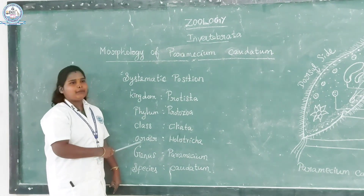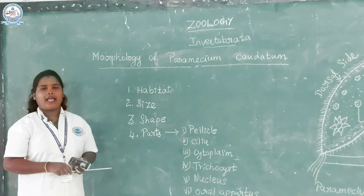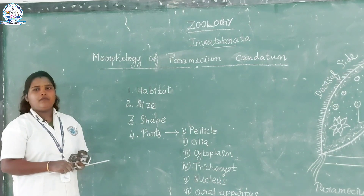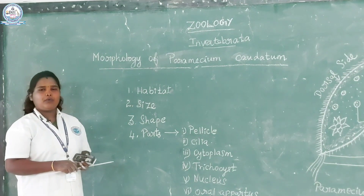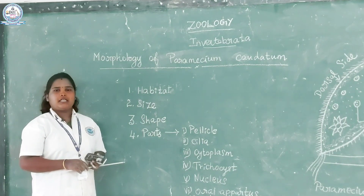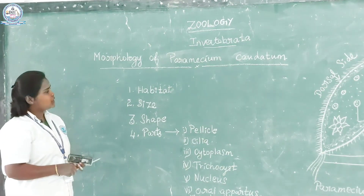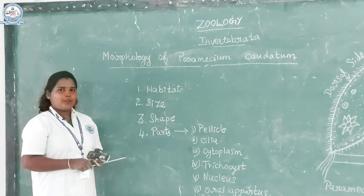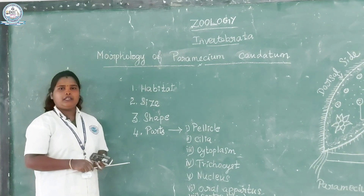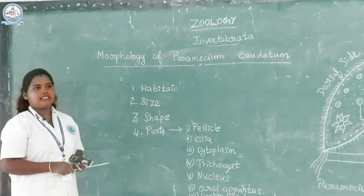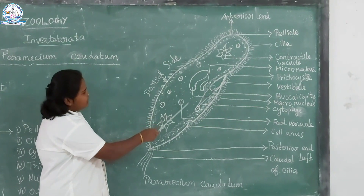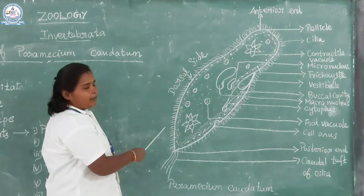This is the systematic position of Paramecium caudatum. Next, habitat — where is it found? It is a freshwater form, mainly found in freshwater bodies like ponds, pools, rivers, and ditches. Next, size: it is microscopic and minute, measuring 0.17 mm to 0.24 mm. Next, shape: this organism looks like a slipper, so it is called a slipper animal.